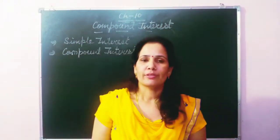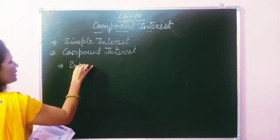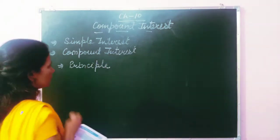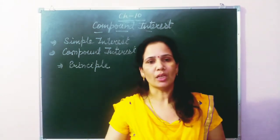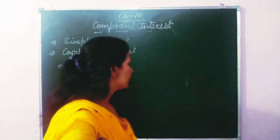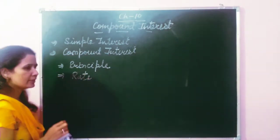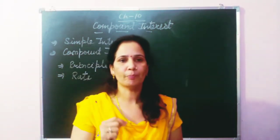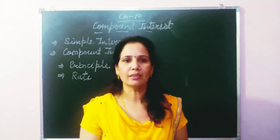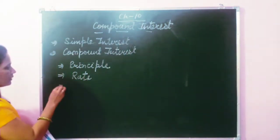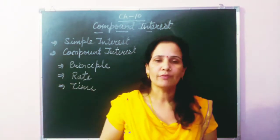In compound interest we are going to use certain terms. The first one is Principal — Principal is that amount which a person borrowed from others for personal use. The second one is Rate — Rate is a percentage of that amount which a person has to pay as interest when returning the money. Then there is Time — Time is the duration or period for which a person borrowed money from someone.